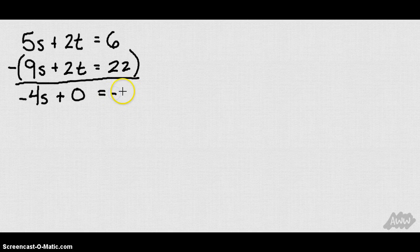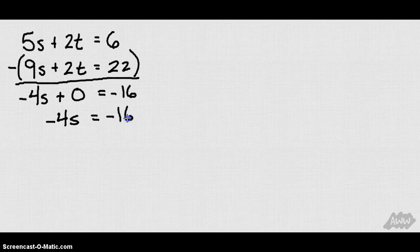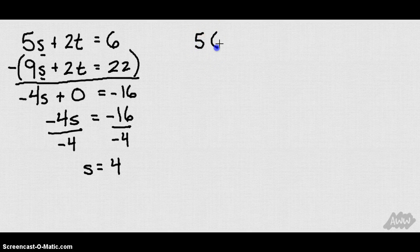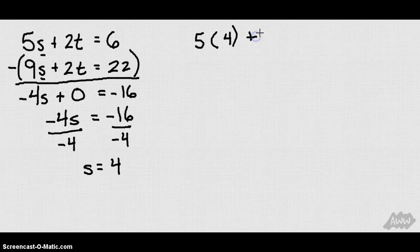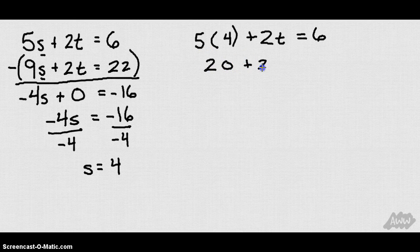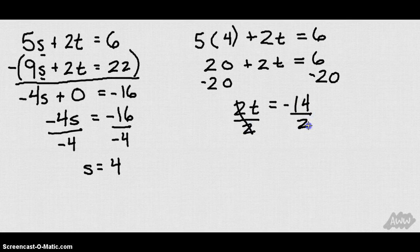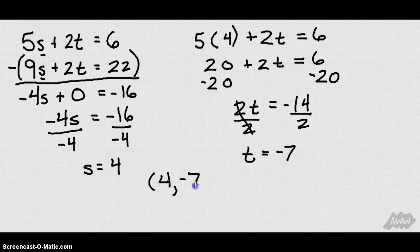So I have negative 4s equals negative 16. I'm going to divide both sides by negative 4. I get s is equal to 4. Again, I can plug that into either s. So 5 times 4 plus 2t equals 6. So 20 plus 2t equals 6. Let's get that t by itself. We'll subtract 20 from both sides. We get 2t equals 6 minus 20, which is negative 14. Let's divide by 2. We get t equals negative 7. I have my solution point at 4, negative 7.